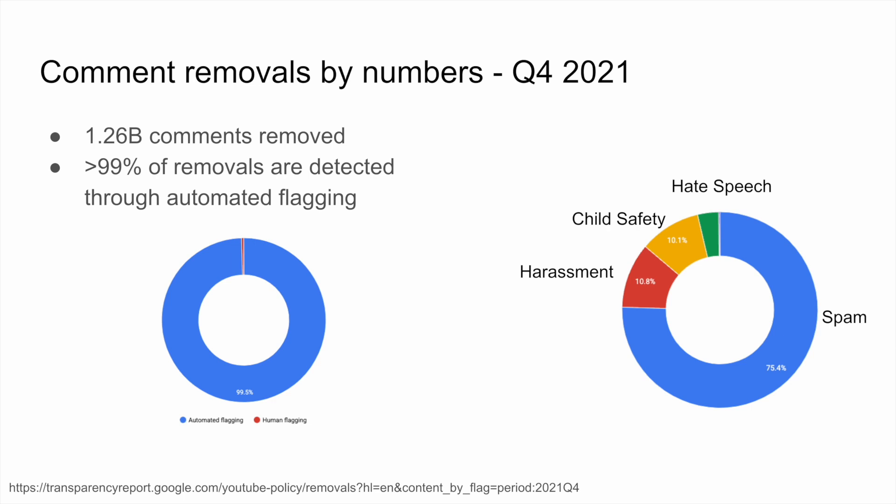On the text side, we removed 1.26 billion comments in Q4 of 2021 due to community guideline violations. You can see the breakdown of removed content by community guideline vertical on the right. The largest violations in terms of comment volume happened in the spam vertical, followed by harassment and child safety. In the text case, more than 99% of these removals were detected through automated flagging by our algorithms.